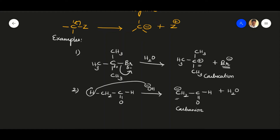Keep in mind: heterolytic cleavage is unsymmetrical cleavage, and the bond breaks unsymmetrically, leading to the formation of charged species. It depends on electronegativity difference — the atom with greater electronegativity retains the bonded pair of electrons, and the one with lesser electronegativity becomes a positively charged cation. In the next video, we will discuss detailed explanations of carbocations and carbanions. Thank you so much, bye.